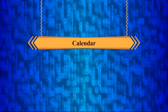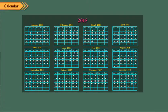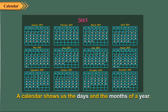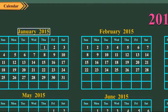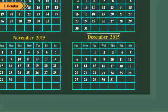Children, look at the calendar shown here. A calendar shows us the days and the months of a year. It starts from the first day of January and ends at the last day of December.